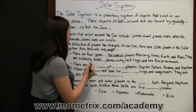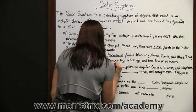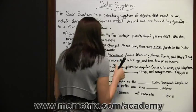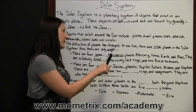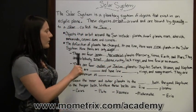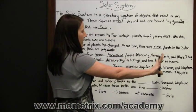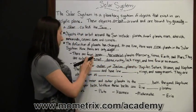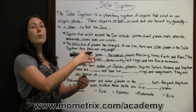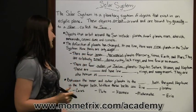Next we have the four outer, or Jovian, planets: Jupiter, Saturn, Uranus, and Neptune. Jovian means coming from Jupiter, so they are Jupiter and outward. Their orbits are further out from the Sun than the inner planets.